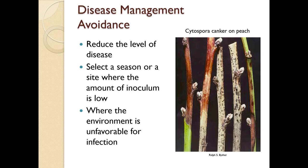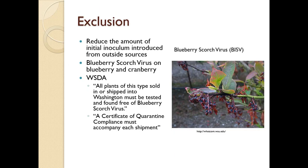When talking about disease management, avoidance means reducing the level of disease by selecting a season or site with low inoculum and conditions unfavorable for infection. For example, cytospora canker on peach is managed with summer pruning because extended dry periods follow. If water is present and this disease is active, pruning will spread it from tree to tree.